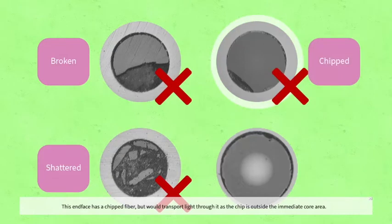This end face has a chipped fiber but would transport light through it, as the chip is outside the immediate core area. It is polished cleanly, and a poor cleave is the most likely cause.